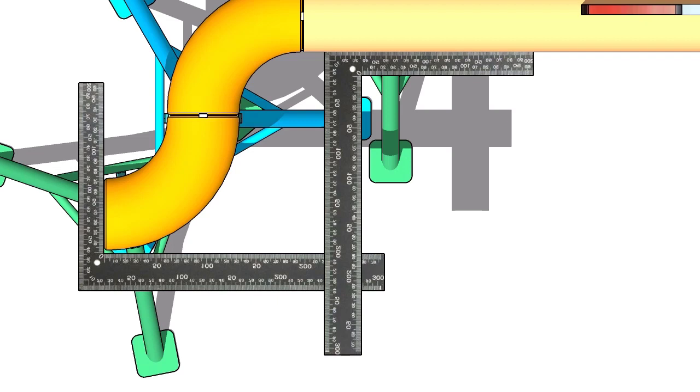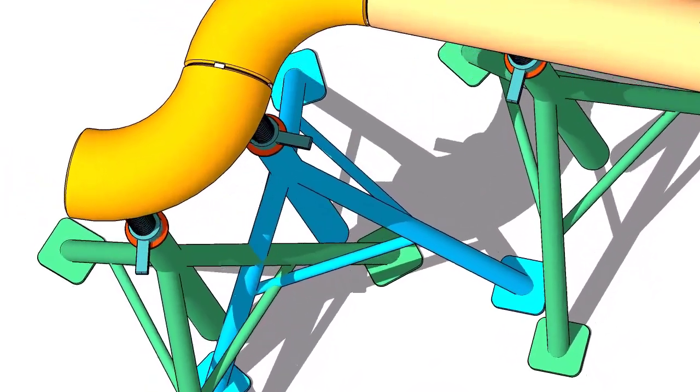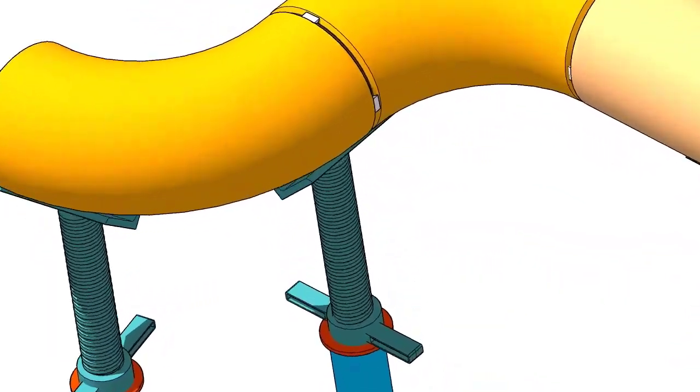Hold two right angles, one on the face of the elbow and one on the pipe side. Now use another right angle and check the squareness. Tack weld on both sides of the elbow.